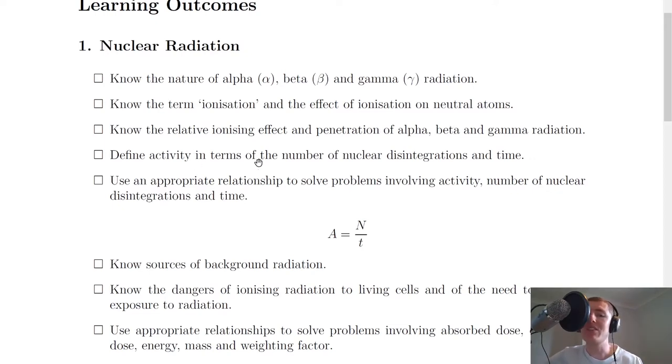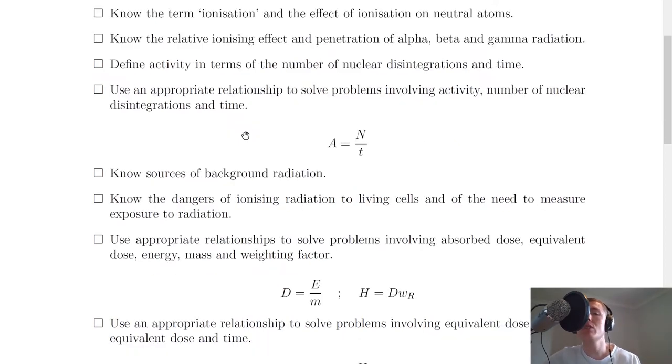Then says to define activity in terms of the number of nuclear disintegrations and time. We define the activity of a radioactive source as the number of decays or number of disintegrations per second. You also need to be able to use an appropriate relationship to solve problems involving activity, number of nuclear disintegrations and time. That's A equals N over T, where A was the activity, N was number of decays and T was time.